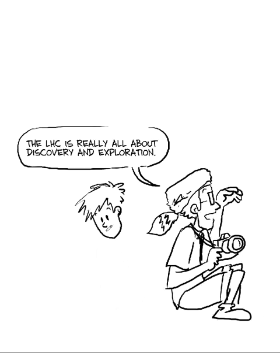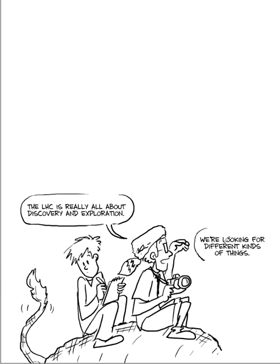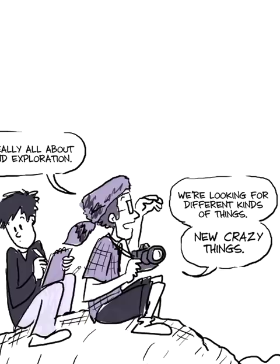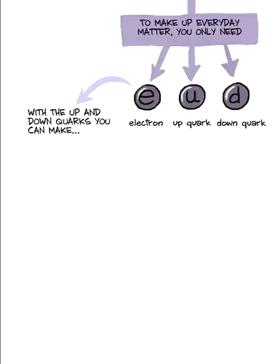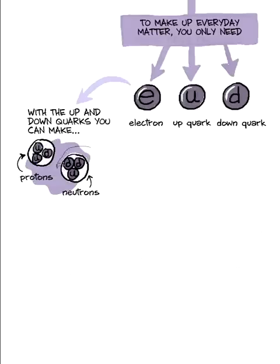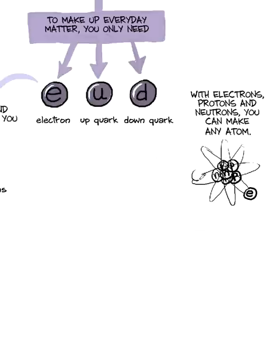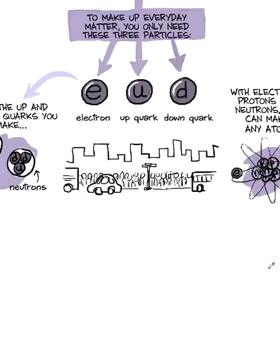The LHC is really all about discovery and exploration. We're looking for different kinds of things, new crazy kinds of things. I mean to make up everyday matter you only need the electron, the up quark and the down quark. Because with the up quark and the down quark you can make a proton or you can make a neutron. Electrons and protons and neutrons, you can make any atom. So you only need these three.